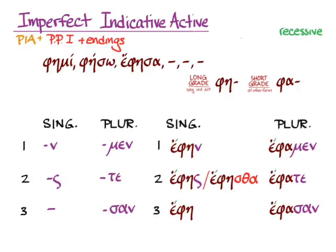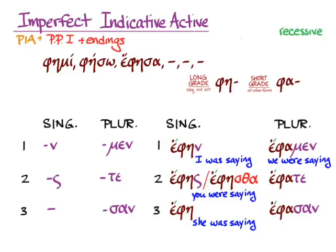So the forms are ἔφην, I was saying; ἔφης or ἔφησθα, you were saying; ἔφη, she was saying; ἔφαμεν, we were saying; ἔφατε, y'all were saying; and ἔφασαν, they were saying.